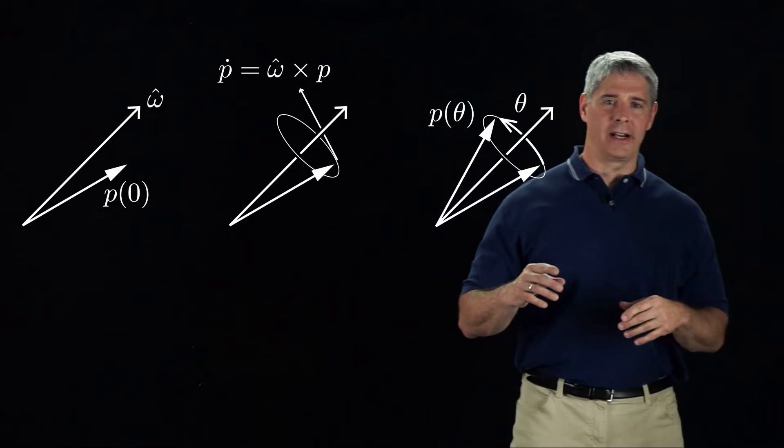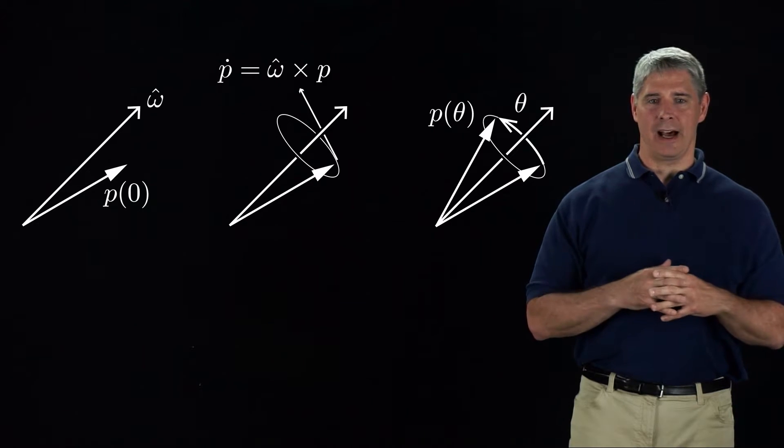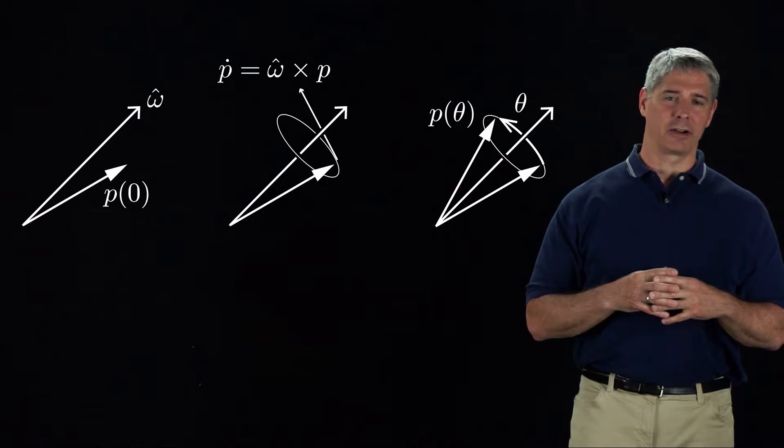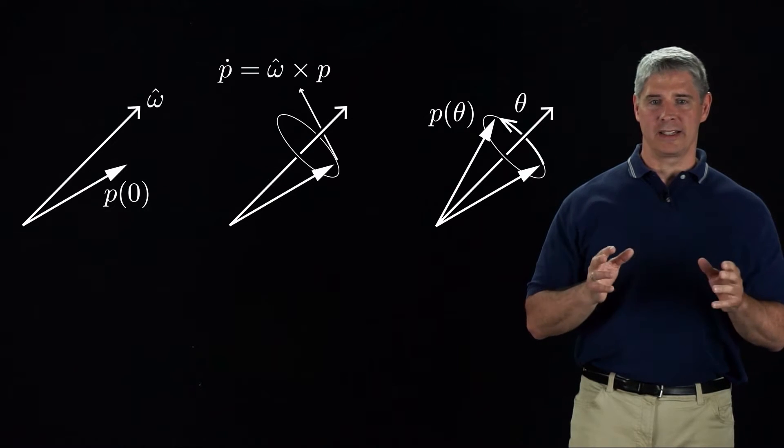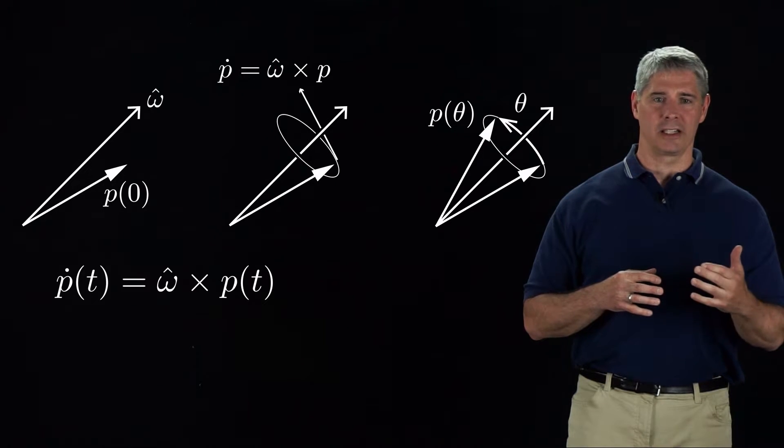After rotating an angle theta, the vector ends up at p at time theta. At any instant of time, the time derivative of p is given by p dot equals omega hat cross p. We can write this as a differential equation, p dot of t equals omega hat cross p of t.